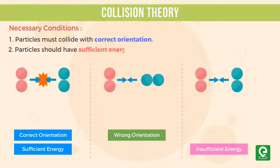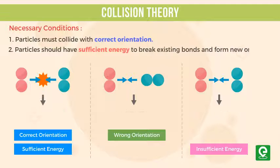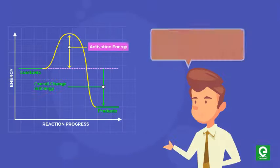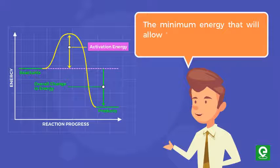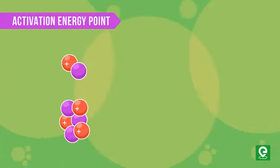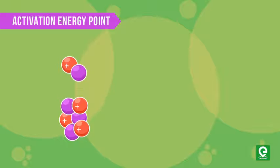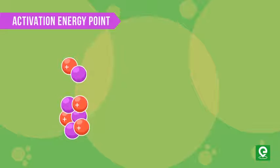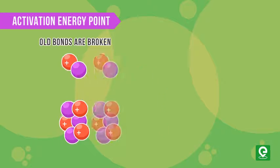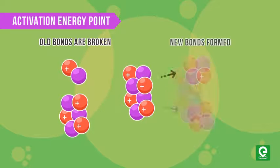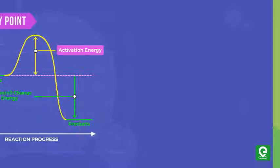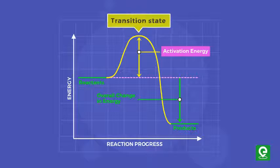The minimum energy that will allow this reaction to happen is known as the activation energy. At the activation energy point, the colliding molecules have formed a transition state in which old bonds are partially broken and new bonds are partially formed.